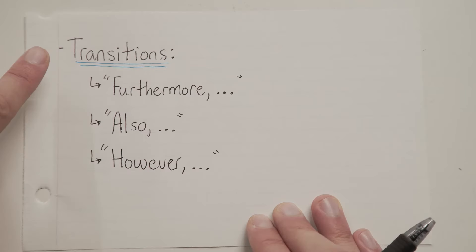A transition, on the other hand, would be something like furthermore, or also, or however. Transitions are used to transition from one sentence to another.